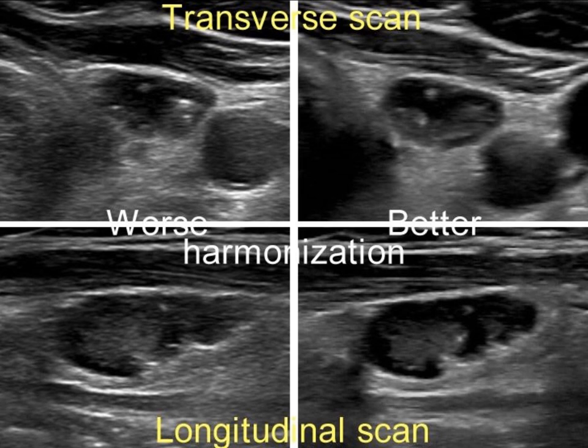If we compare the upper transverse images, this difference cannot be observed. This can be explained by technical reasons. The anatomic situation — the presence of Adam's apple — hindered the correct placement of the probe to the neck, which worsened the penetrance of the ultrasound wave.